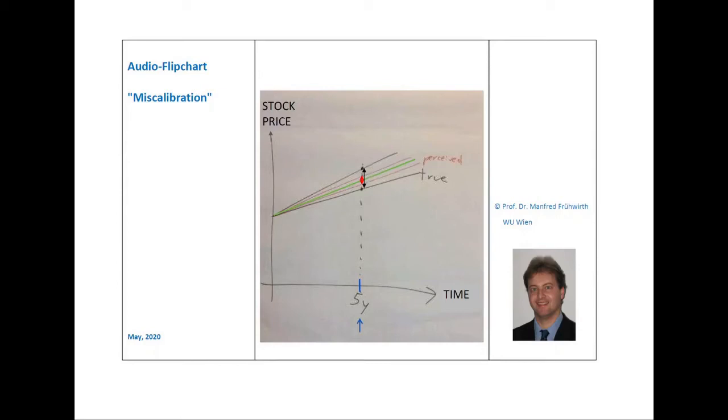Now, let us assume that the confidence intervals are established by someone who is not subject to any bias. This person is able to state perfectly correct confidence intervals as shown here in black.